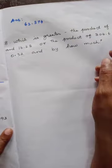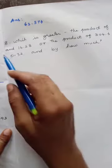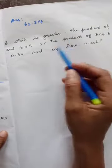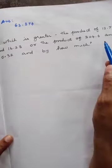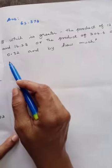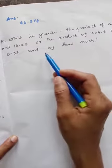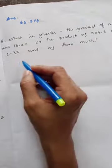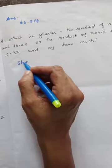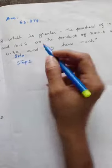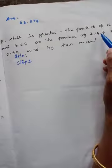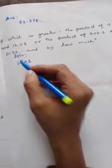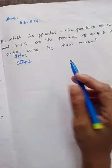Problem 8: Which is greater — the product of 12.7 and 16.28, or the product of 304.6 and 0.32? And by how much is it greater? Step 1: multiply 12.7 and 16.28. Step 2: multiply 304.6 and 0.32. Then subtract both results to find how much greater.